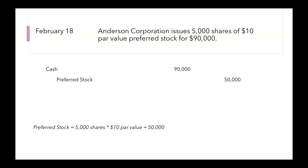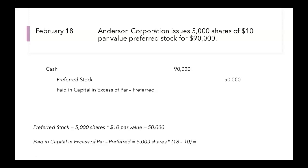Our debits and credits don't equal, so we have paid-in capital in excess of par for preferred. You could just take $90,000 minus $50,000 to find that we need to credit paid-in capital $40,000. There's another way to get that number: take our 5,000 shares and multiply by the difference between the market price and our par value. $90,000 divided by 5,000 shares shows each share sold for $18. $18 minus the $10 par value, multiplied by 5,000 shares, gives us $40,000.